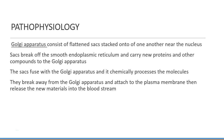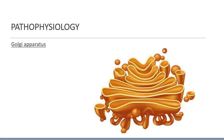The Golgi apparatus consists of flattened sacs stacked near the nucleus. The sacs break off the smooth endoplasmic reticulum and carry new proteins and other compounds to the Golgi apparatus. It chemically processes the molecules, which then break away from the Golgi apparatus, attach to the plasma membrane, and release those new materials into the bloodstream.